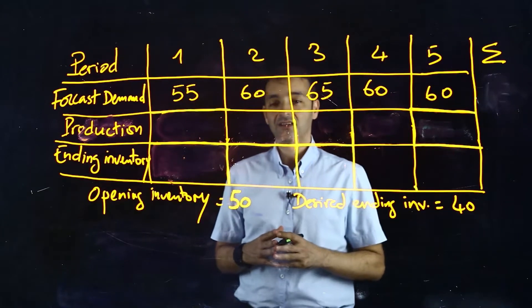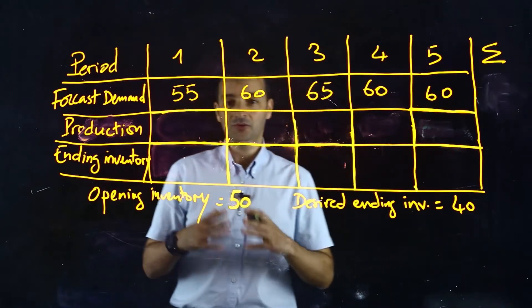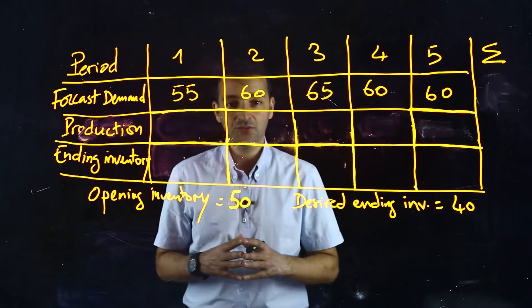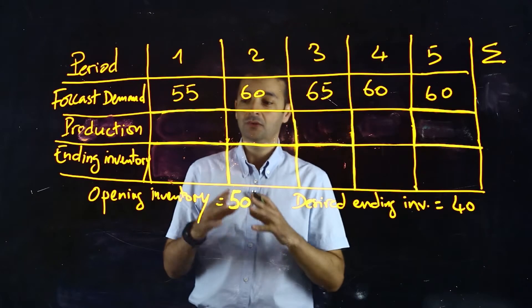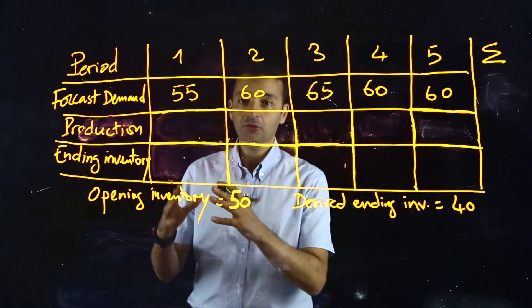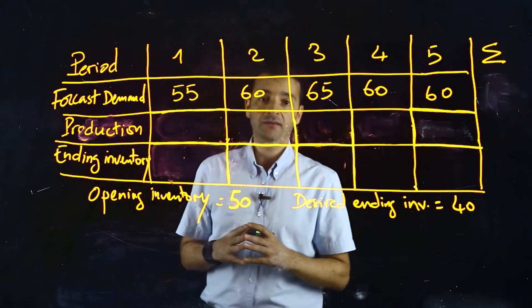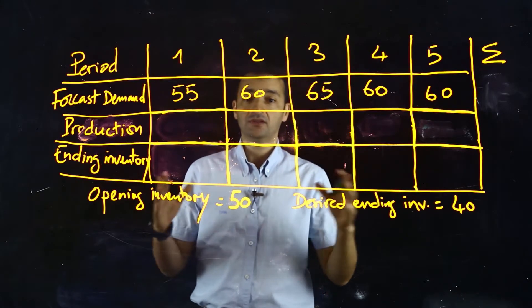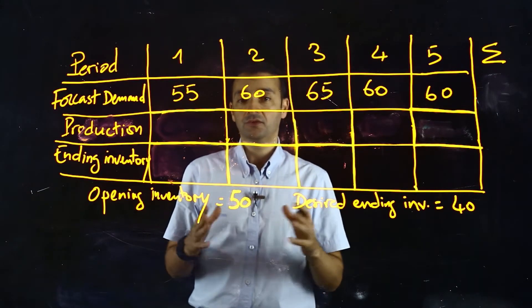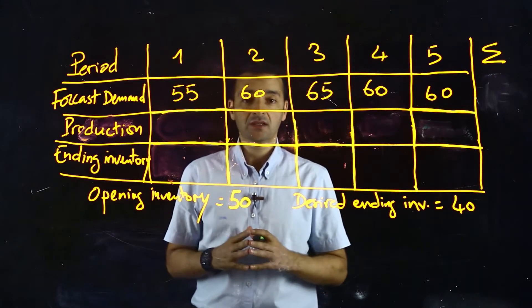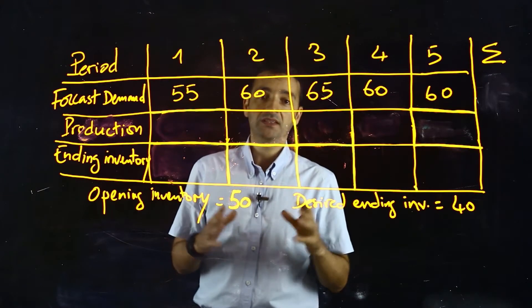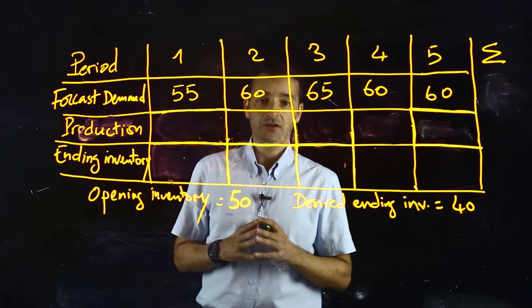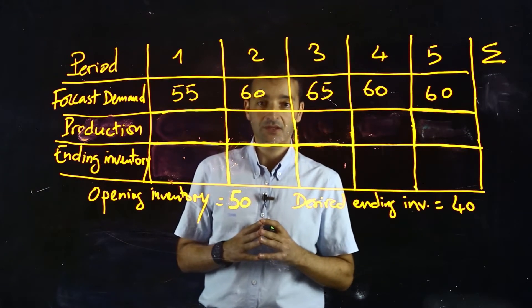In this example or exercise we will see how to calculate the ending inventory for different periods when we are in a MTS (Make-to-Stock) manufacturing environment.